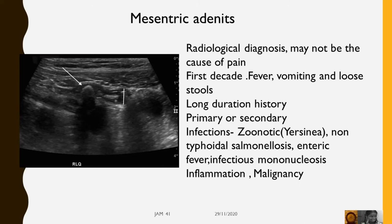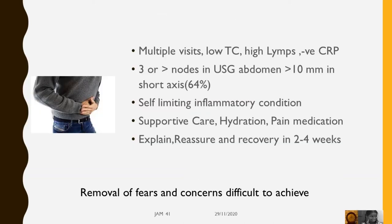It can occur either as primary or secondary — secondary to infections like Yersinia, non-typhoidal salmonellosis, enteric fever, and infectious mononucleosis. It can also occur with inflammation and malignancy. These children might have had multiple visits.